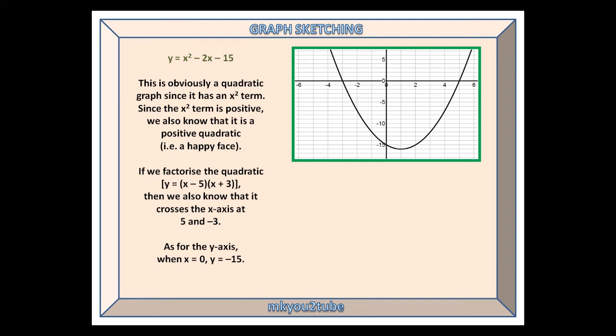Our second curve is y equals x squared minus 2x minus 15. This is obviously a quadratic graph, since it has an x-square term. Since the x-square term is positive, we also know that it is a positive quadratic, i.e. a happy face.